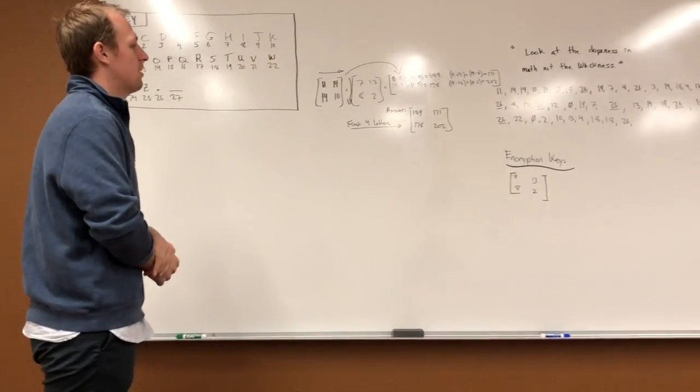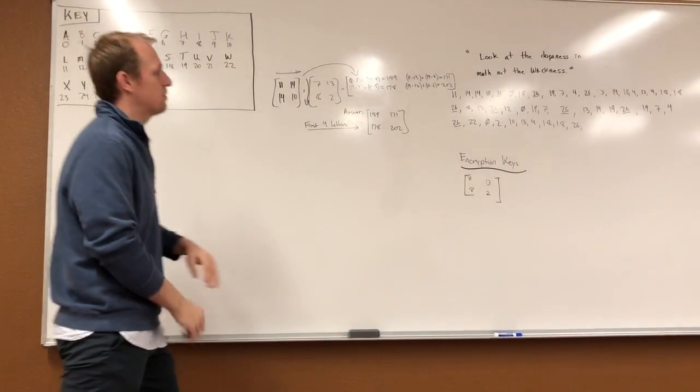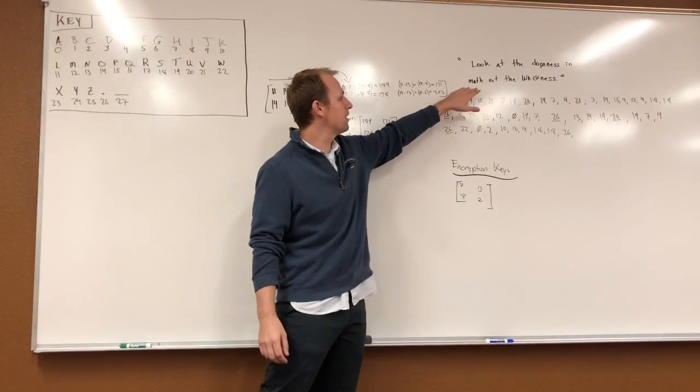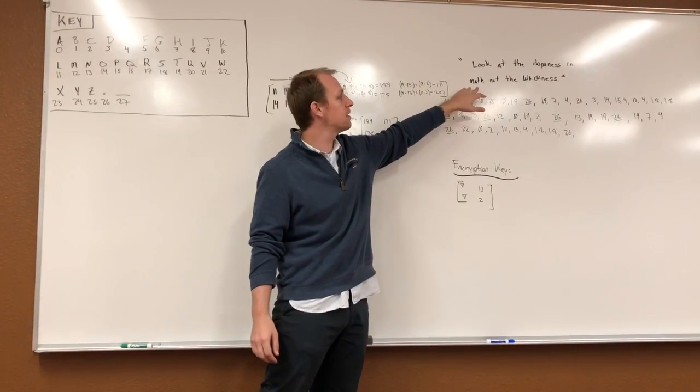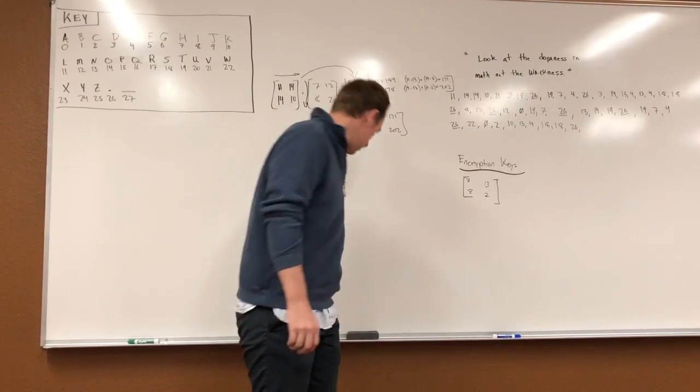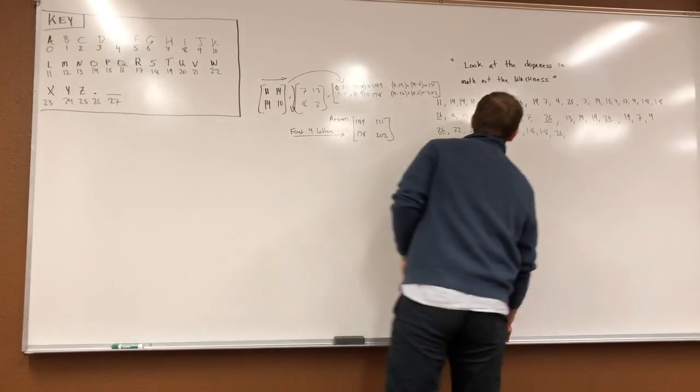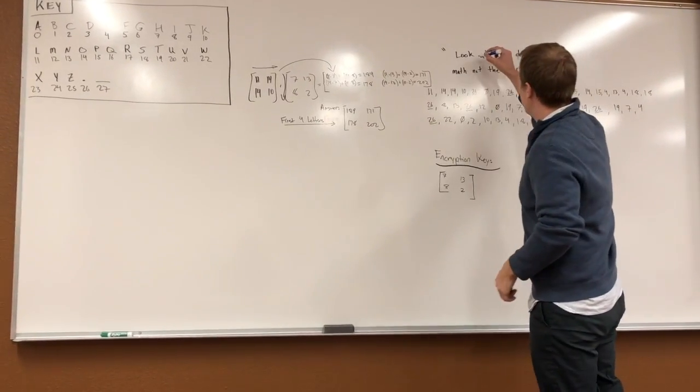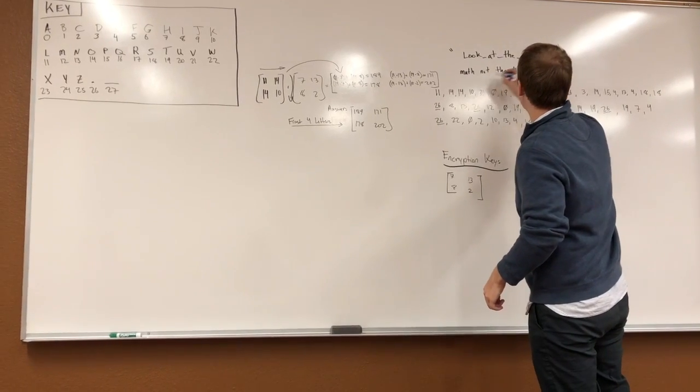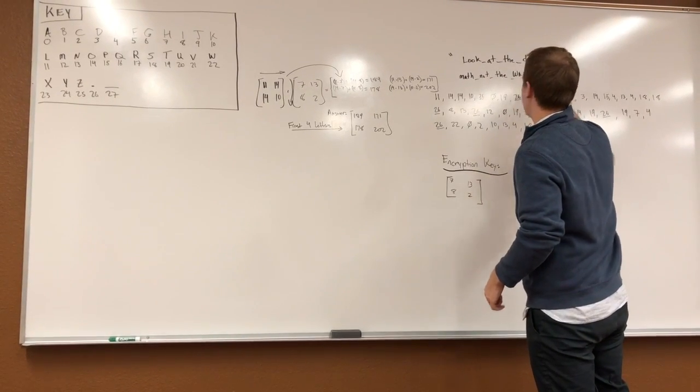The message we're going to be encrypting is this message here: Look at the dopeness in math not the wackness. When we go through there and go over all the characters and the spaces, there's 46 spaces and characters in this.